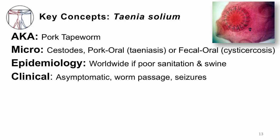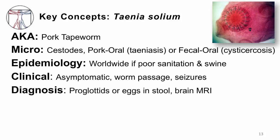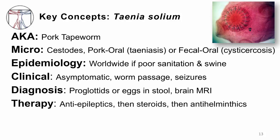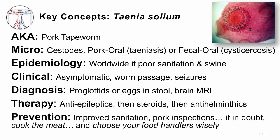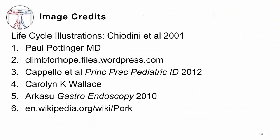It's often asymptomatic, but in the case of teniasis, people may pass a worm or a piece of a worm, and in the case of neurocysticercosis, people may have seizures. You make a diagnosis by checking the stool for proglottids or eggs, or by looking for neurocysticercosis using MRI or CT. Always treat seizures aggressively, tamp down the immune system with corticosteroids, and then — and only then — go after the worms. Prevent this with better sanitation, better pork inspection, cook that pork thoroughly, and choose your food handlers wisely. Thank you for your attention.